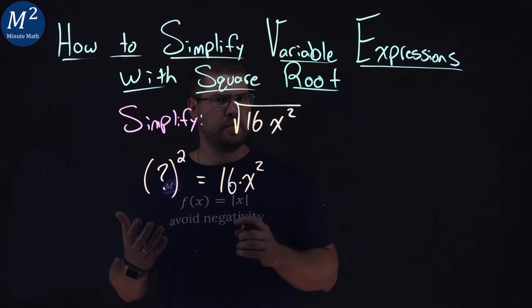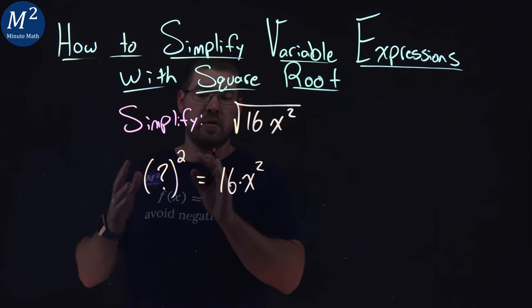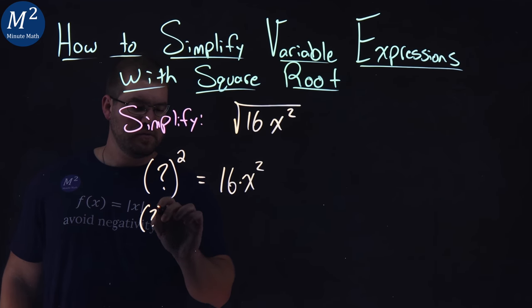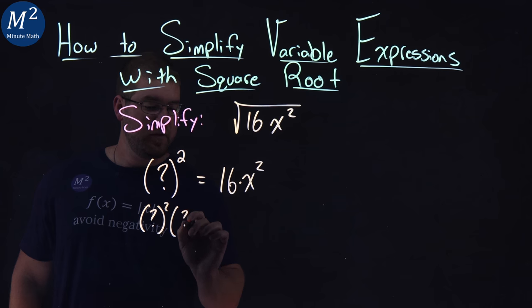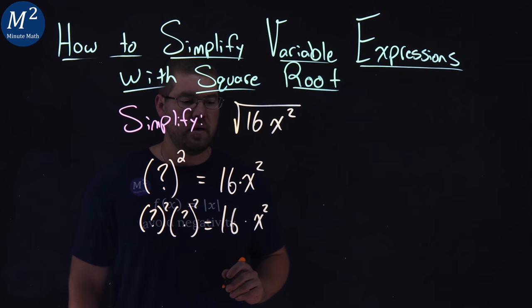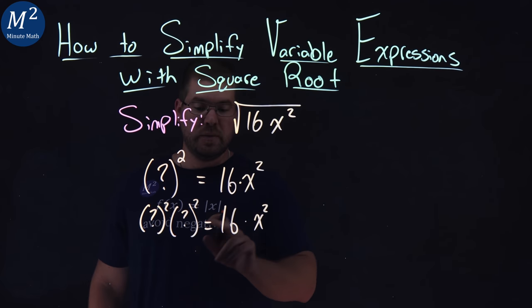Our rules of exponents allow us to apply the exponent to a multiplication, so we can almost think of it like this. What squared times another thing squared gives me a 16 times an x squared. Well, x squared should be pretty easy. We can toss x right there. It lines up. What about 16?